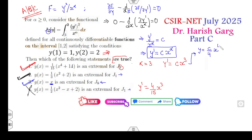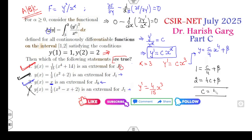To verify by integration: y = (c/4)x⁴ + β. Substituting y(1) = 1 gives 1 = c/4 + β, and y(2) = 2 gives 2 = 16c/4 + β = 4c + β. Subtracting: 1 = (15/4)c, so c = 4/15 and β = 1 - 1/15 = 14/15. This confirms the result. The correct answers are A, B, and C.